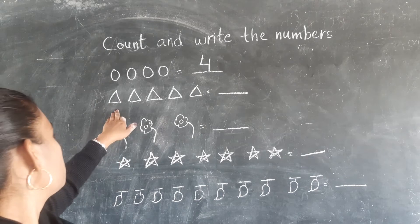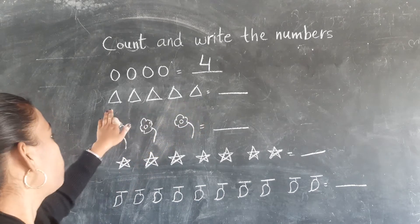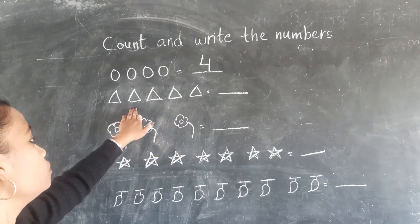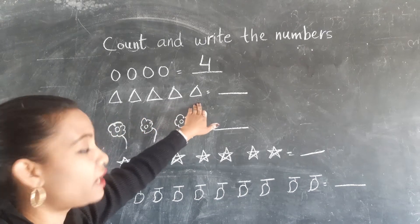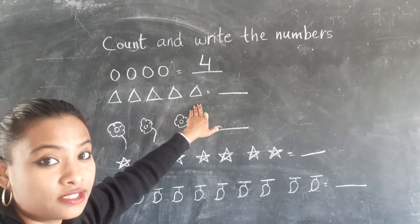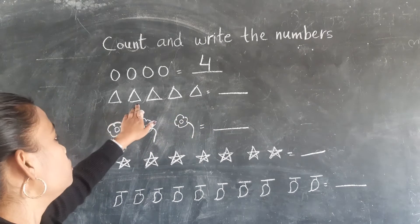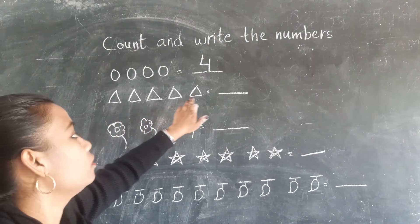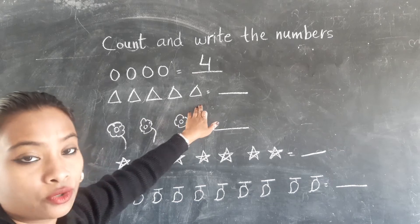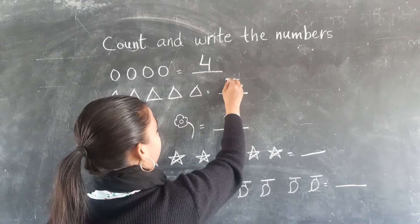Now next, how many triangles are there? 1, 2, 3, 4, 5. Yes, once again, 1, 2, 3, 4, 5. So you have to write 5 here.